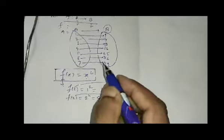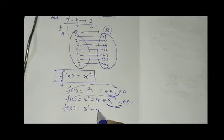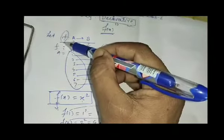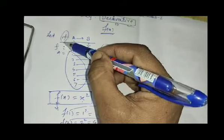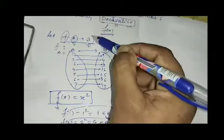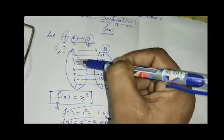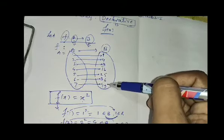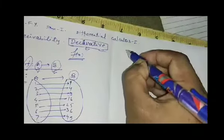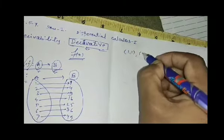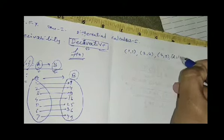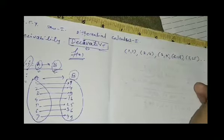Continuing: f(3) = 9, f(4) = 4² = 16, and so on. So a function is a special type of rule by which elements of set A are associated to elements of set B. From set A = {1, 2, 3, 4, 5, 6, 7} to set B = {1, 4, 9, 16, 25, 36, 49}, we get ordered pairs: (1,1), (2,4), (3,9), (4,16), (5,25), and so on — this is function f.